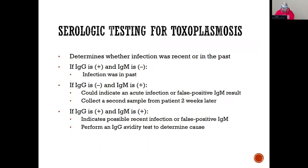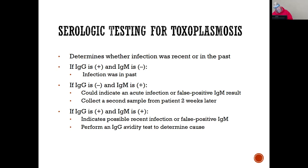We can do serological testing for toxoplasmosis to determine whether we have a current or past infection. If IgG is positive and IgM is negative, that means past infection. If IgG is negative and IgM is positive, that could indicate acute infection — or a false positive — so collect a second sample two weeks later when we expect IgG to come up. If both IgG and IgM are positive, that indicates possibly a recent infection or false positive.